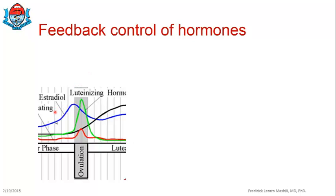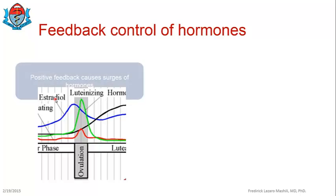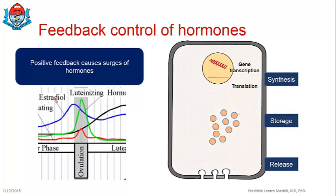A very good example of a positive feedback mechanism is what happens during the menstrual cycle: estrogen levels increase, stimulating the anterior pituitary to produce high levels of luteinizing hormone. This luteinizing hormone then acts by positive feedback to stimulate the ovaries to produce more estrogen, and this continues until the negative feedback mechanism comes into play. Just like negative feedback, the positive feedback mechanism also operates at different levels of hormone production and release: at the level of synthesis, storage, and release of hormone.